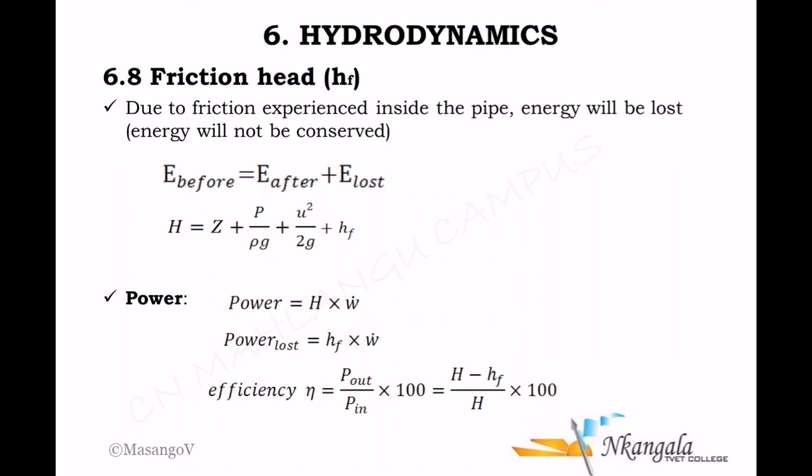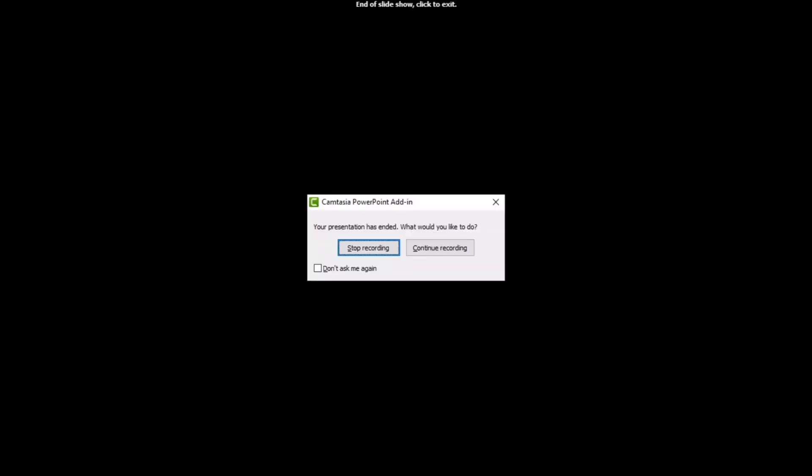From there, I can calculate power before, power lost, and power after. Energy after divided by energy before gives the mechanical efficiency, which can also be calculated as (H − hf) / H.